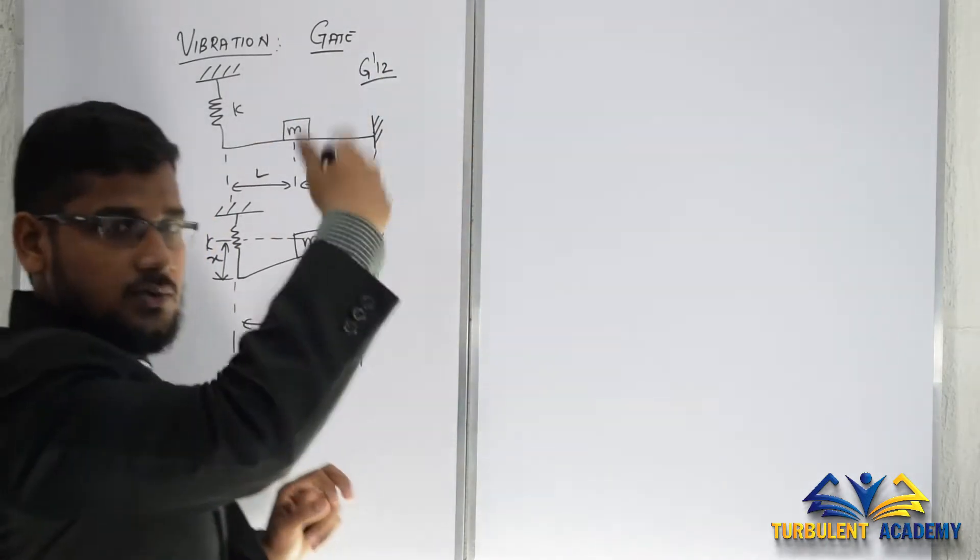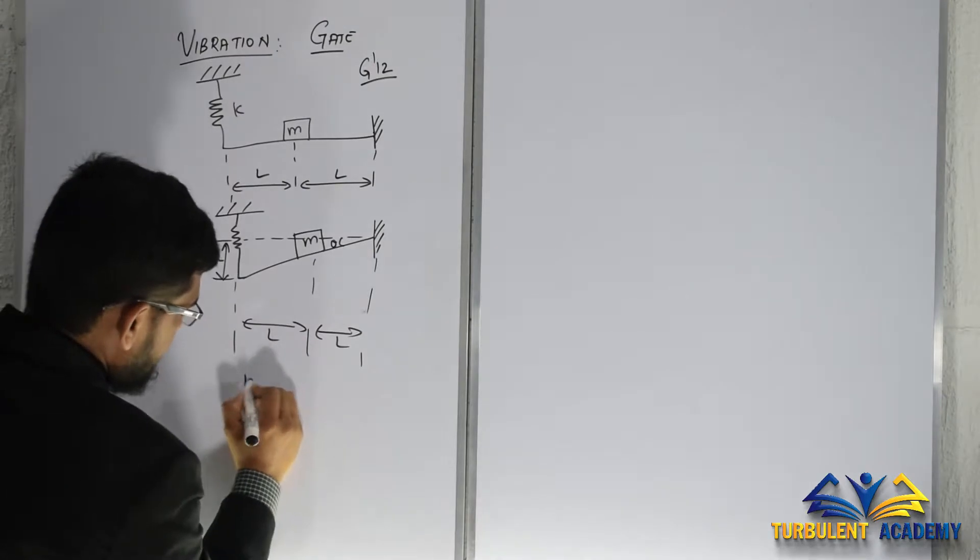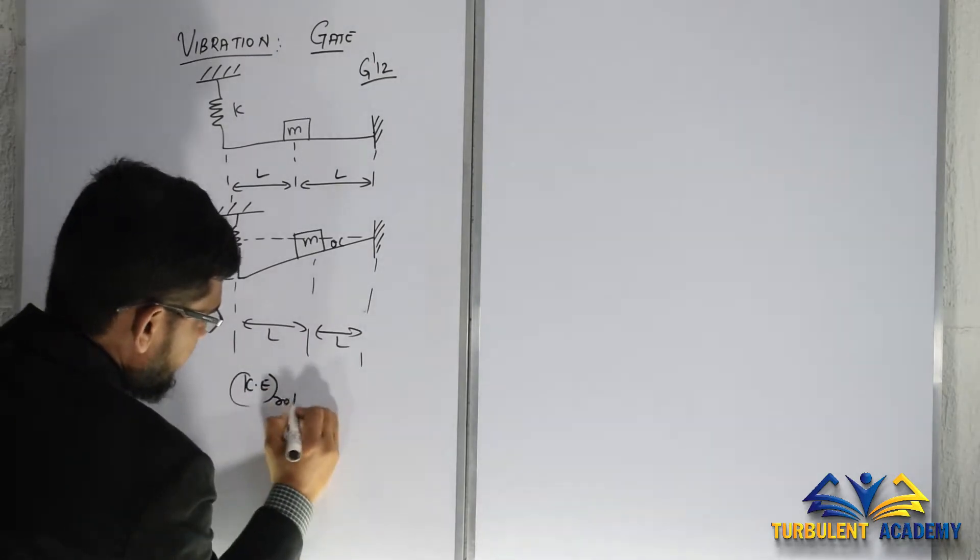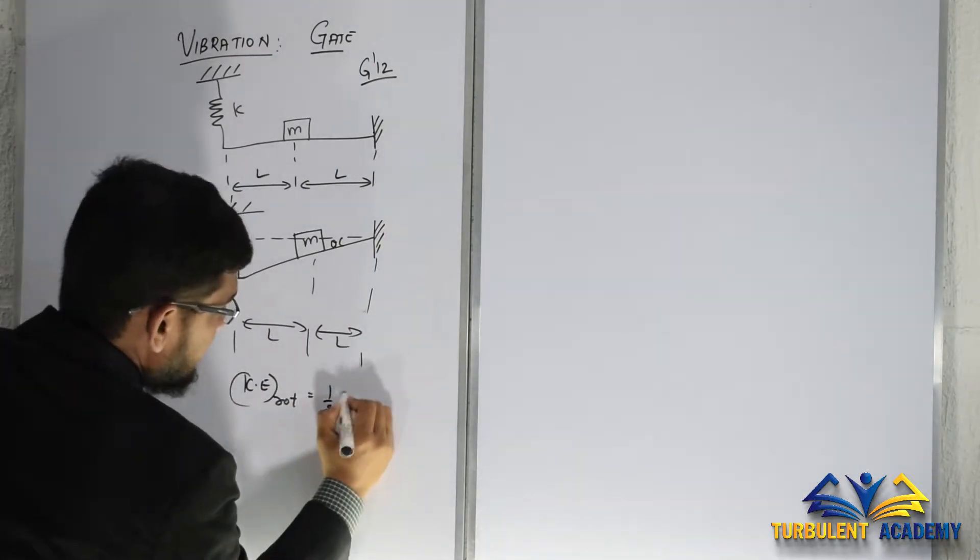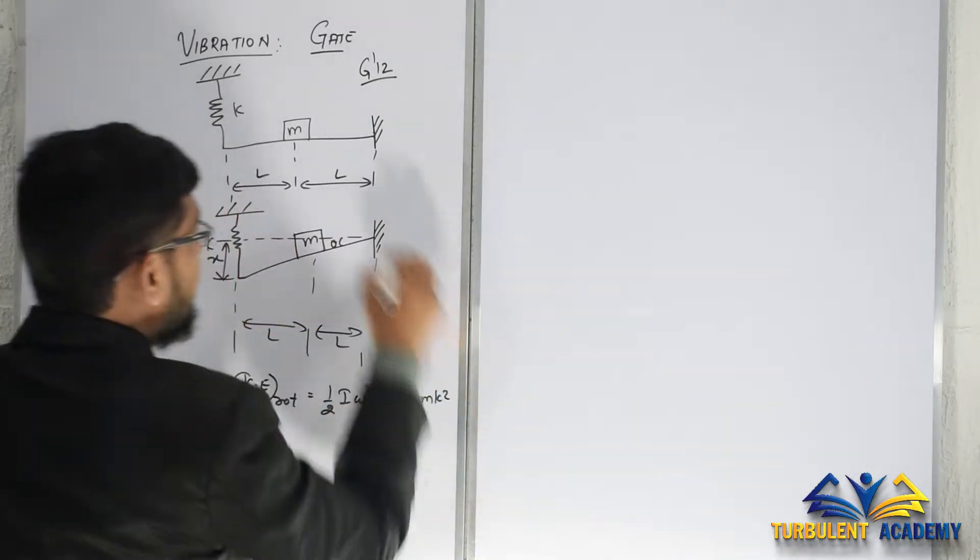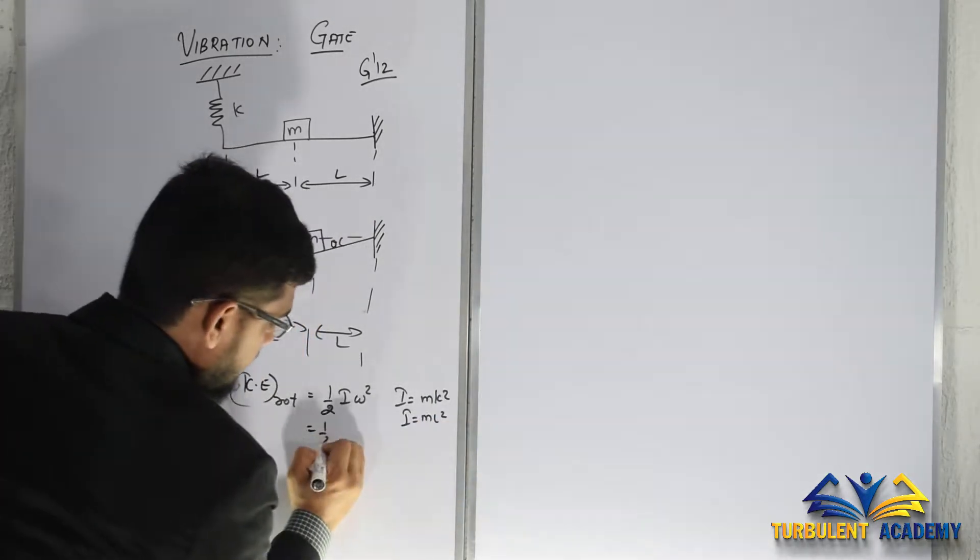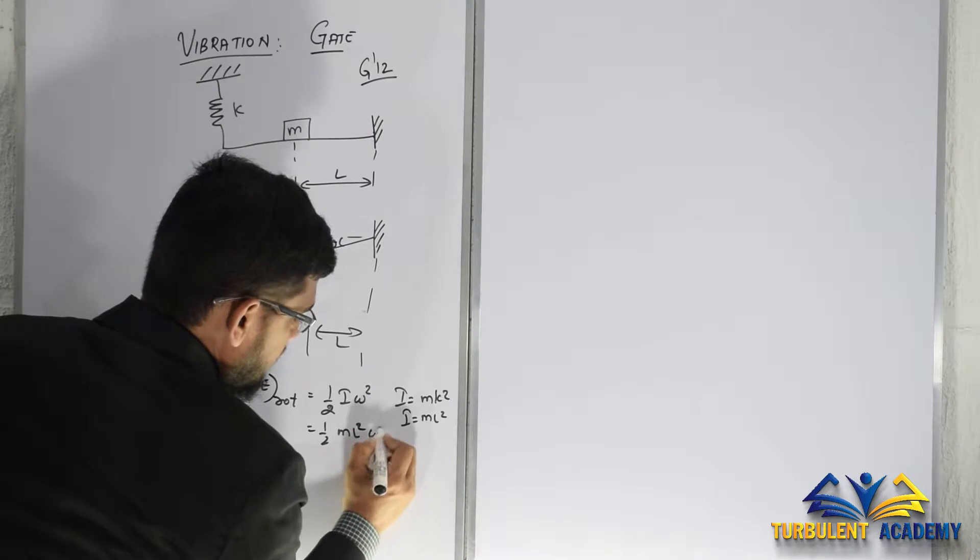It's going to be rotational kinetic energy. Kinetic energy rotational due to external mass is half I omega squared. I is going to be mk squared, k is radius of gyration which is l, so I equals ml squared, giving us half ml squared omega squared.